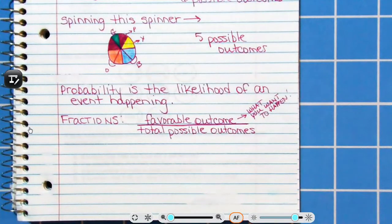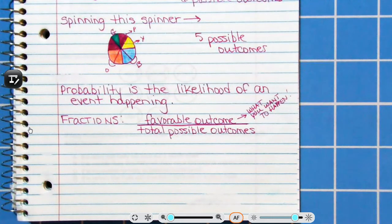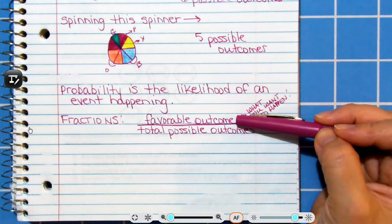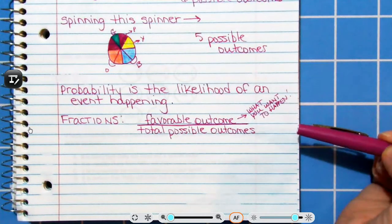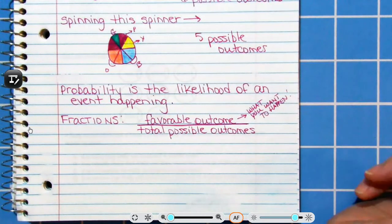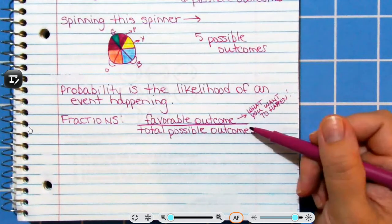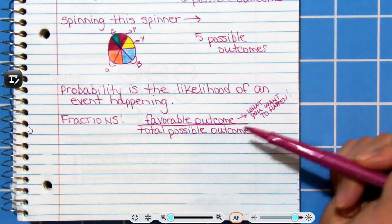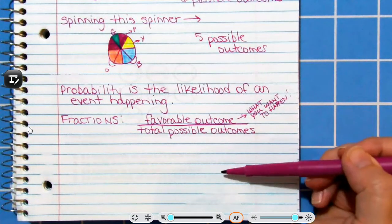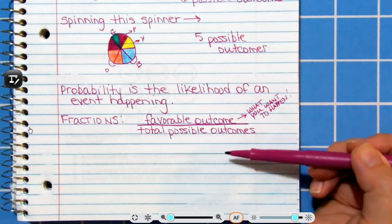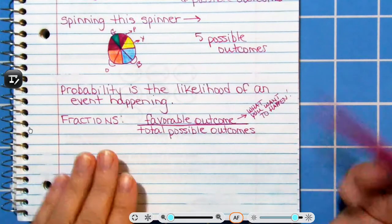Probability is the likelihood of an event happening — how likely it is that something will happen. And in fourth grade, we start writing that as a fraction. Your numerator would be the favorable outcome — that is what you want to happen, like reaching into a bag and pulling a red marble. Red would be the favorable outcome. And then the denominator is going to be your total possible outcomes. So, we're going to look at a few examples of these.